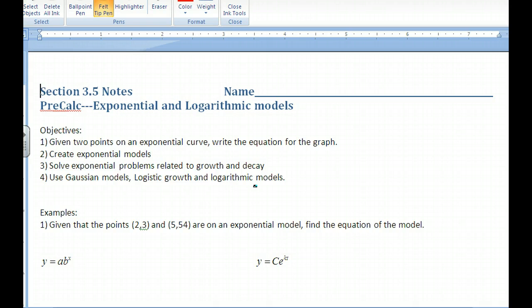We're going to be given two points, (2, 3) and (5, 54), that are on an exponential model and find the equation of this model. Before we do this, I want to set you up with a system of equations that you're familiar with. If you look at this situation, 2x + 3y = -4 and 4x - 2y = 8. This is a system of two equations, two unknowns. You should be familiar with this.